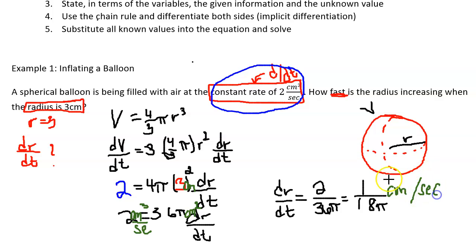Now in a real life problem exact, well in mathematics exact answers are usually preferred over rounded answers but in a real life problem saying that the radius of the balloon is increasing 1 over 18 pi centimeters per second doesn't really give us any context. So we do want to go ahead and divide this and provide a rounded answer.